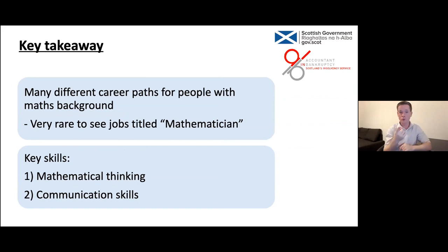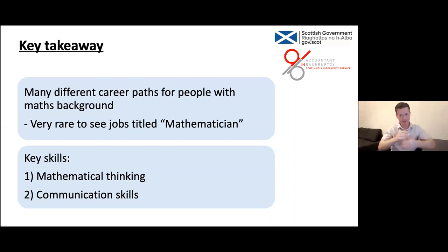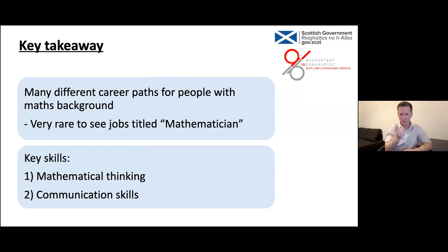Drawing towards the end now, I'd like to share something useful for your future career. As Jenny and I have already explained, there is no one pathway for a mathematician — there are lots of circuitous roads. You will never see a job advertised as 'Wanted: Mathematician.' What people want is a mathematician, but they don't advertise for it as such. What they want is somebody who has strong maths skills and analytical skills — and that's where we come in.